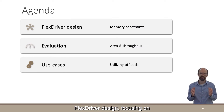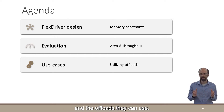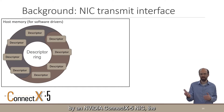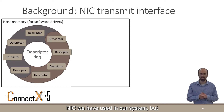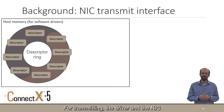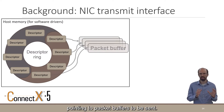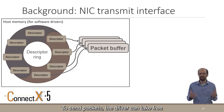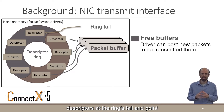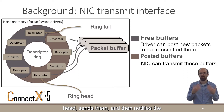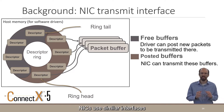In this talk, I will go over the FlexDriver design focusing on memory constraints, then show some micro-benchmark evaluation, followed by example applications and the offloads they can use. To provide some background, I will go over the software interface exposed by the NVIDIA ConnectX 5 NIC — the NIC we've used in our system, though many NICs use similar interfaces. For transmitting, the driver and the NIC share a ring data structure in host memory, with descriptors pointing to packet buffers to be sent. NICs use similar interfaces also for receive buffers and for completion notifications.